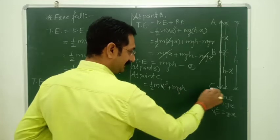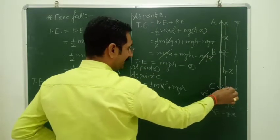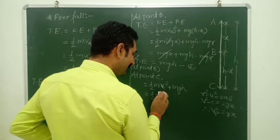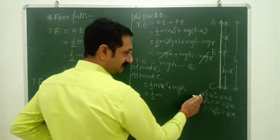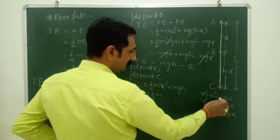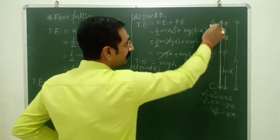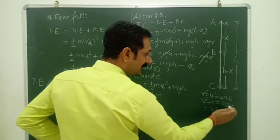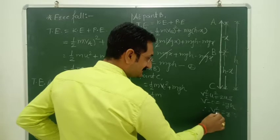So the formula now is: one-half m·(V_C)². Using the third kinematic equation: V_C² minus U² = 2·g·s, with U = 0 and total displacement = H (from A to ground). So V_C² = 2gH. Substituting: total energy at C = one-half m·2gH = mgh.